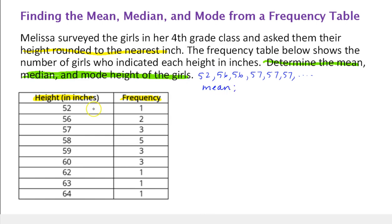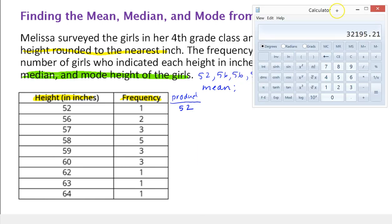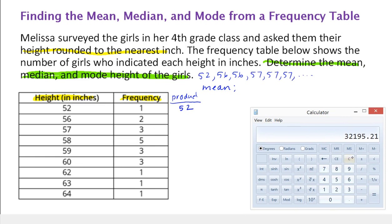What we're going to do is multiply these two columns. Let's call this the product and make a new column. The idea is there's 1 fifty-two inches, so 52 times 1 is 52. If we were to add up these two 56's that would be 112. Another way to find 56 added to itself twice is 56 times 2, so that's 112.